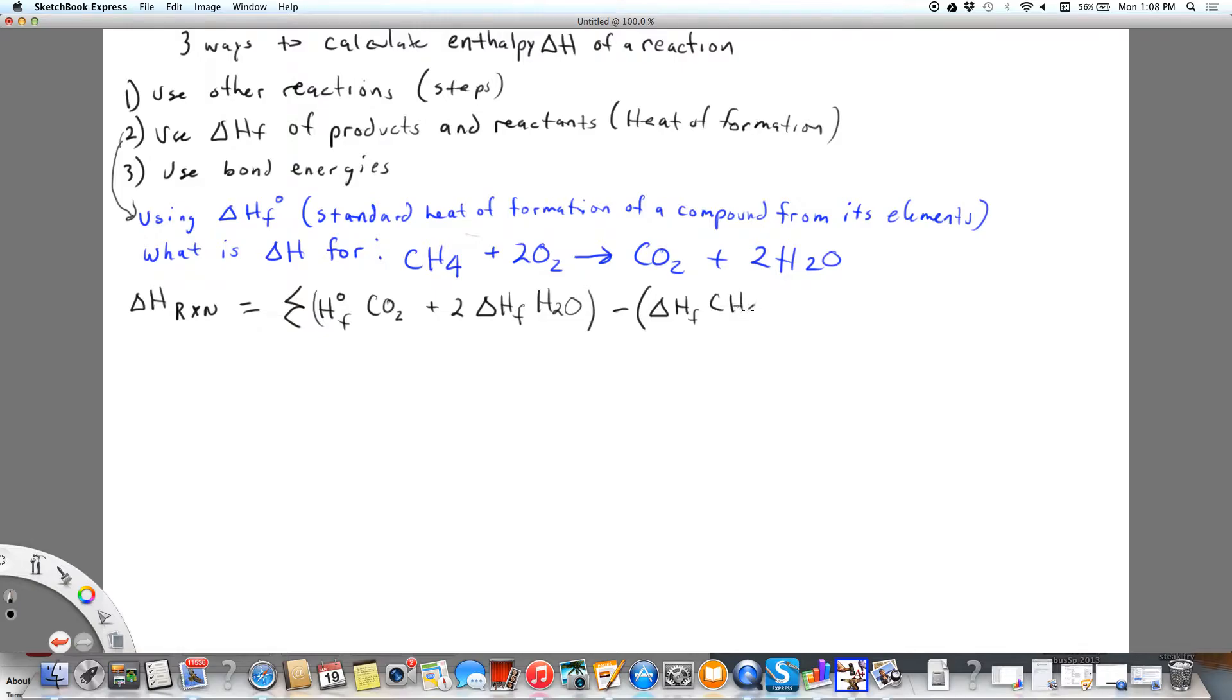We're going to add up the products and then we're going to subtract the heats of formation of the reactants: methane and two, because we have two oxygens, two times the heat of formation for O2. So we're subtracting the sum of the heats of formation of the reactants from the sum of the heats of formation of the products.